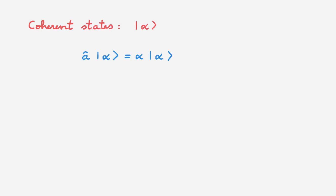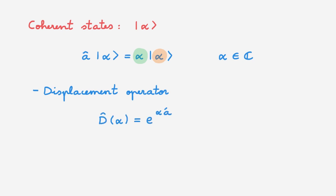Let's now have a quick look at coherent states, which we typically label with the ket alpha. They are defined as the eigenstates of the lowering operator. The eigenvalues are in general complex numbers, as the lowering operator is not Hermitian. We can write coherent states in a variety of alternative but equivalent forms, but the one that we will use today builds on the displacement operator. The displacement operator D(alpha) is defined as the exponential function of this sum over ladder operators. We can then write the coherent state alpha as equal to the action of the displacement operator on the ground state of the quantum harmonic oscillator.